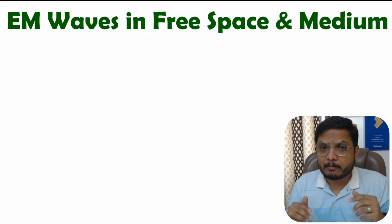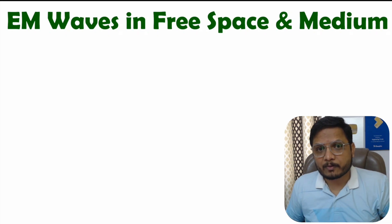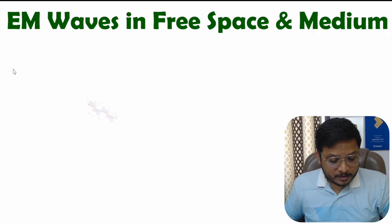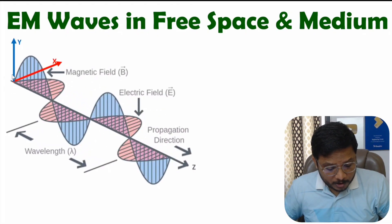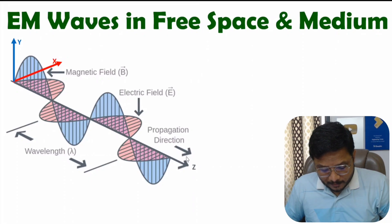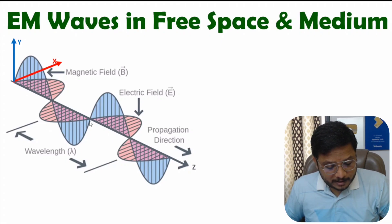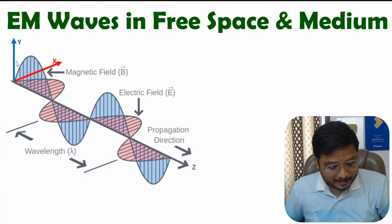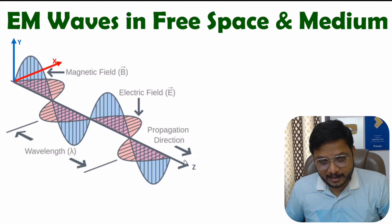First of all, I will explain propagation of EM wave. You can observe here we have propagation of EM wave towards Z direction. Here we have electric field oscillation with respect to the X-axis, and here we have magnetic field oscillation with respect to the Y-axis. So propagation of EM wave is happening towards Z direction.